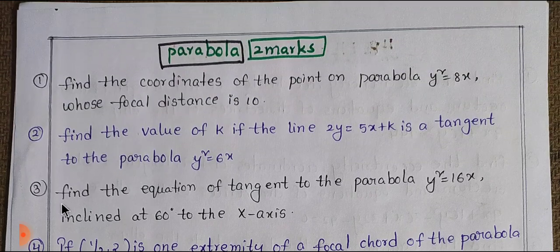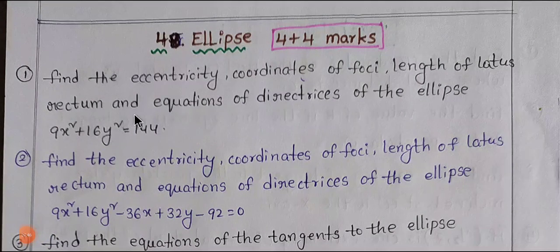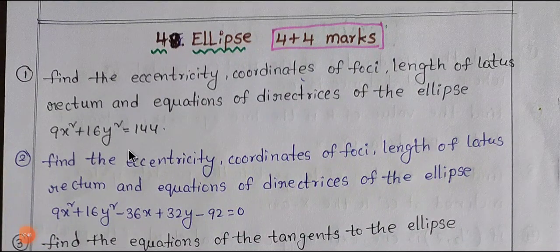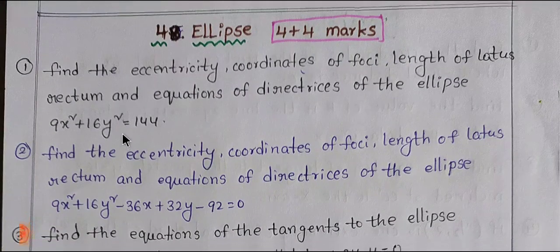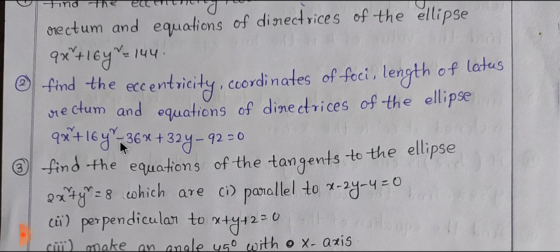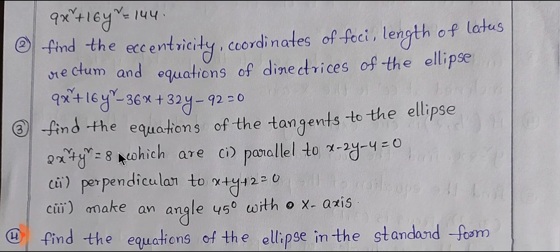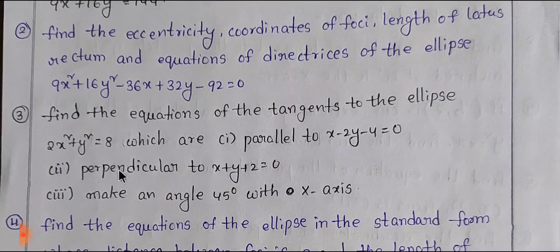Next, Ellipse: 4-mark problems are prepared for the Ellipse section, along with a little bit of additional access. Clarity is prepared for any problems in this section.